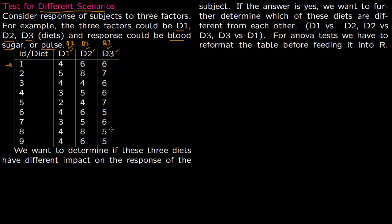Once you have data like this, we want to determine if these three diets or three scenarios have a different impact on the response of the subject. So is D1 different from D2 and different from D3? If the answer is yes, we want to further find out which factors are different — D1 versus D2, D2 versus D3, and D3 versus D1.